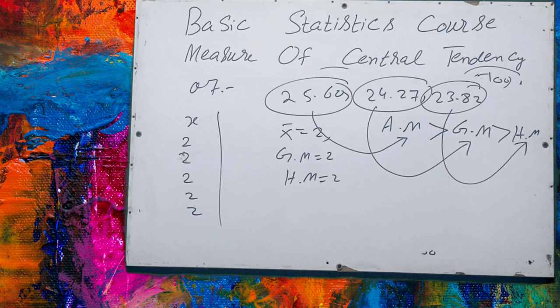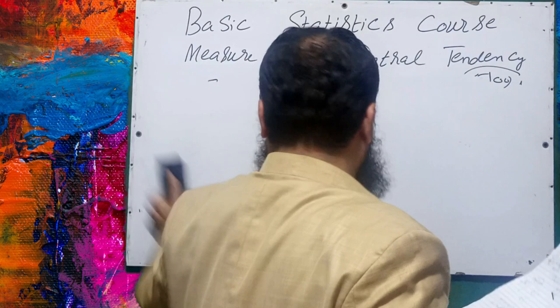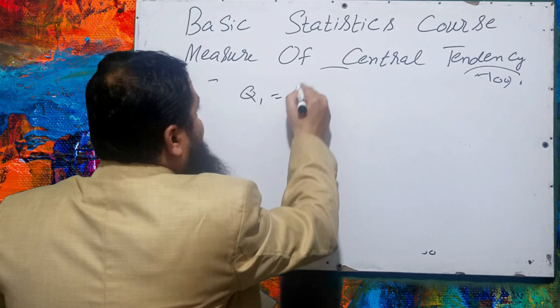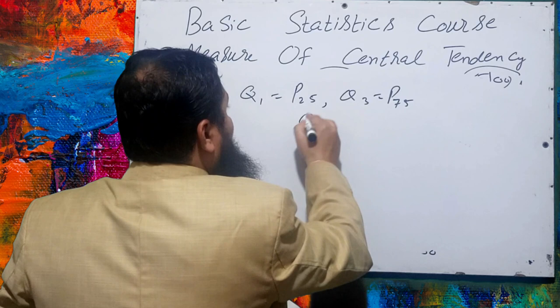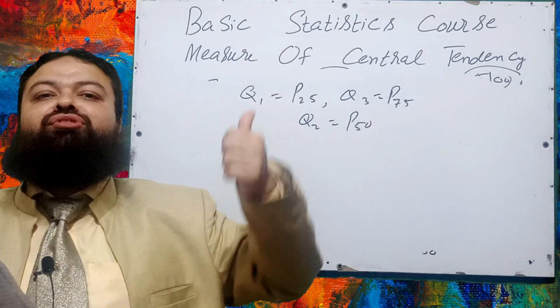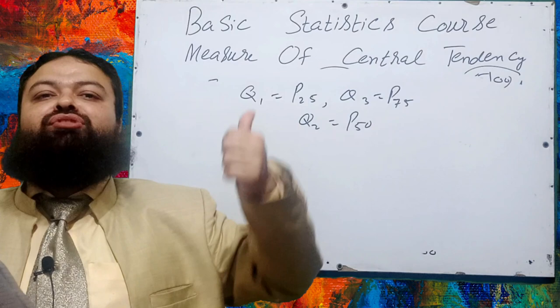Question number 9: can all quartiles be expressed as percentiles? Yes. Q1 is also called P25, Q2 is called P50, and Q3 is called P75. All three quartiles can be expressed as percentiles.